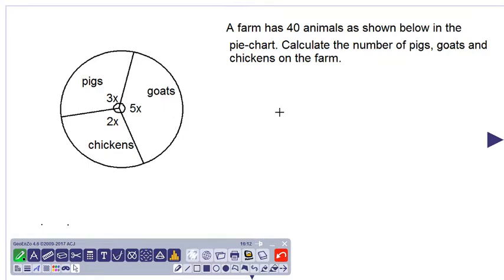Hello everybody, we have a pie chart in front of us with some algebraic terms in it. We are told that a farm has 40 animals and they are displayed in the pie chart.